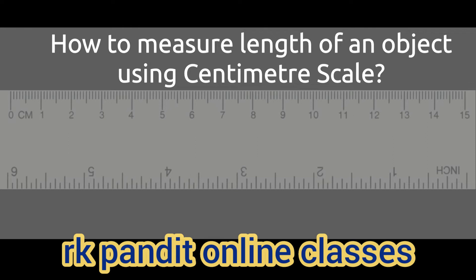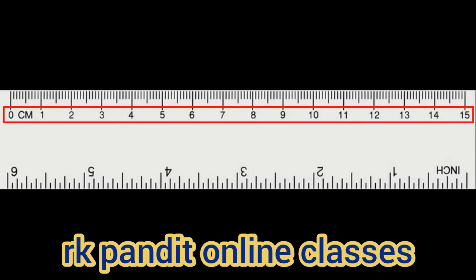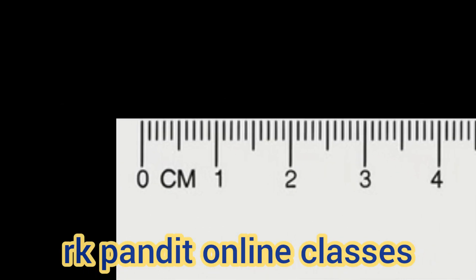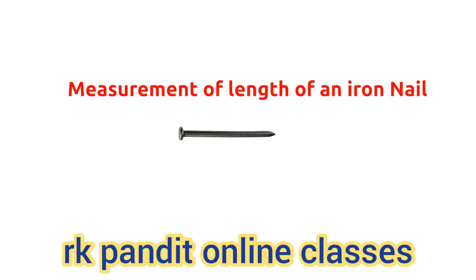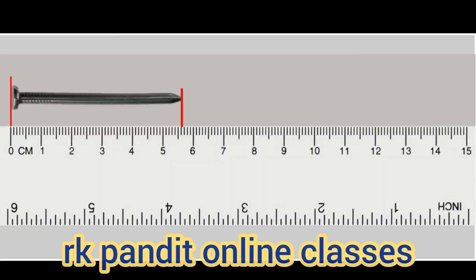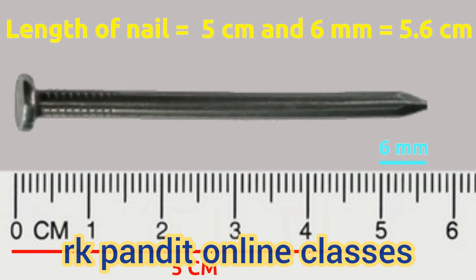In this video, we will learn about measuring length using a centimeter scale. The centimeter scale in our compass box has 15 equally separated markings, with the distance between each mark equal to 1 centimeter. Each centimeter is further divided into 10 equal parts, each of length 1 millimeter, so 1 centimeter equals 10 millimeters. To measure an iron nail, keep the scale's 0 at one end of the nail. The reading at the other end shows 5 centimeters and 6 millimeters, which can also be written as 5.6 centimeters.